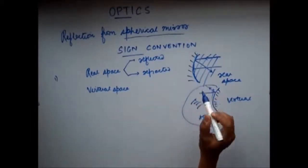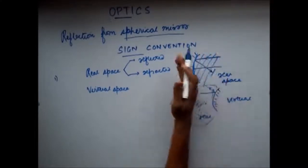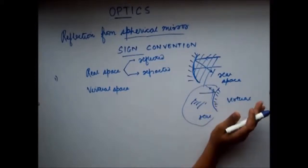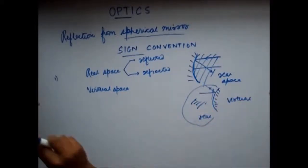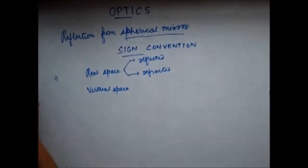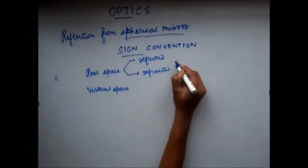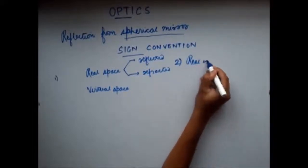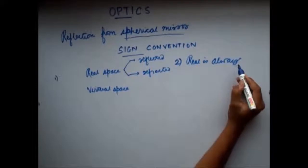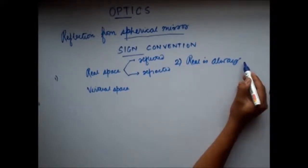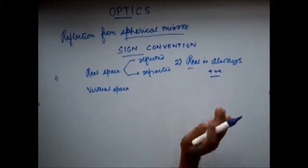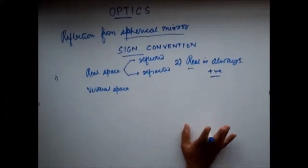The lens or the mirror divides the space into two parts — this side and this side. One side the reflected ray or the refracted ray will lie; that side is the real space and the other side is the virtual space. The second point of the sign convention is that real is always positive. So in our sign convention, real I'll keep as positive and virtual I'll keep as negative.